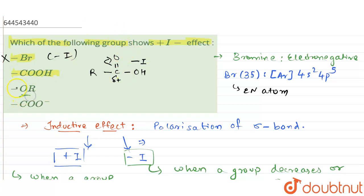Next we have the OR group. In this case, the oxygen atom is electronegative and hence it is going to pull electrons towards itself. So this option is also incorrect — OR shows minus I effect.